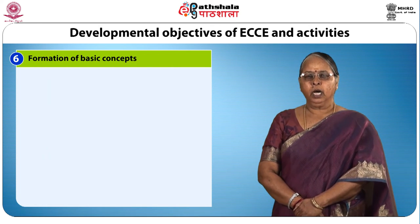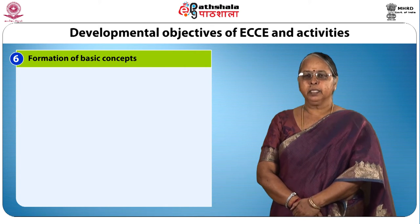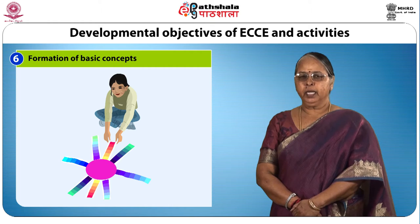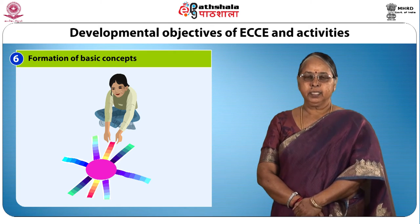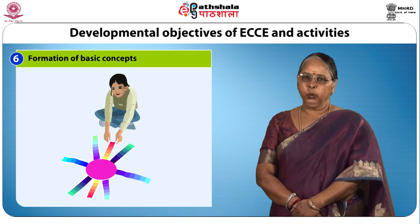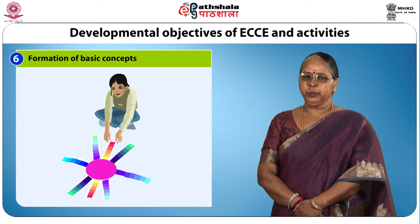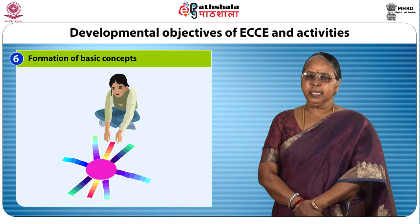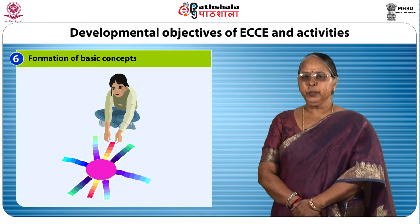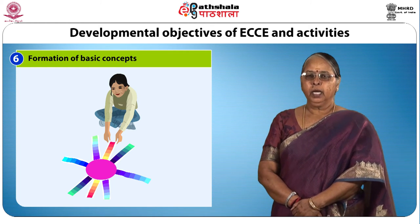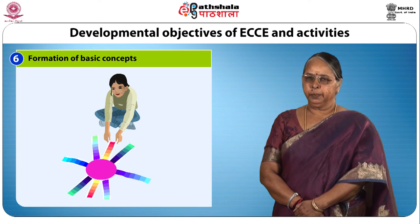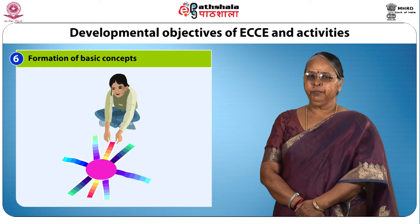Now let us see how the formation of basic concepts takes place. Activities to identify and name different colors — color concept: activities to match, identify and name basic colors such as red, blue, yellow, black and white by three to four years. Activities to understand that mixing and blending of colors leads to formation of new colors. Activities to enable the child to match, identify and name colors like orange, purple, brown and pink by four to six years.